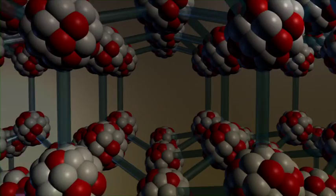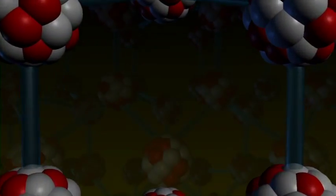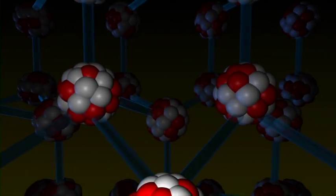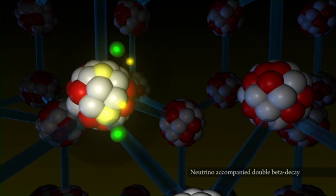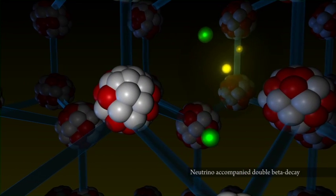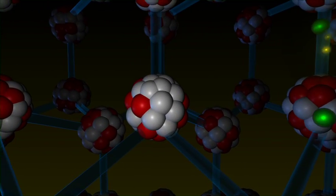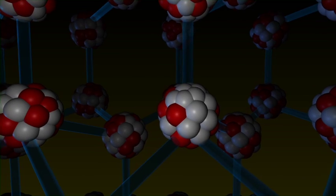Neutrino-accompanied double beta decay is a standard process. Two neutrons, here red, of the nucleus decay at the same time into two protons, here white. Two electrons and two neutrinos are released. The neutrinos are so elusive that they escape the experiment without being detected.